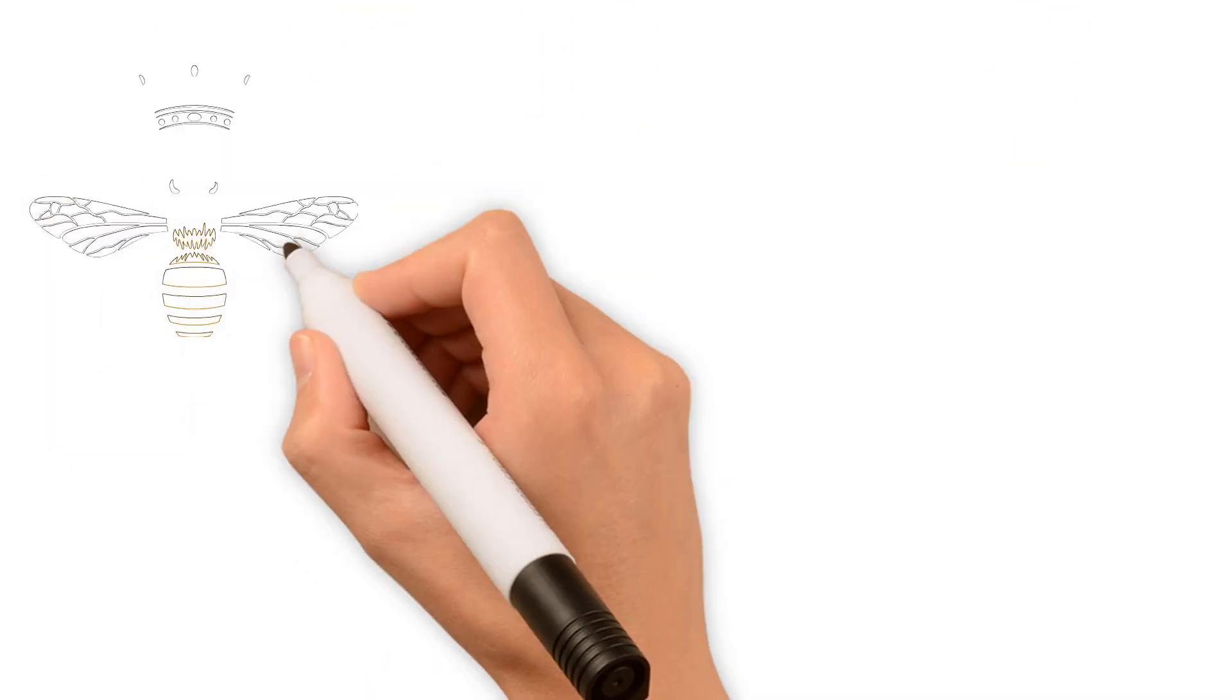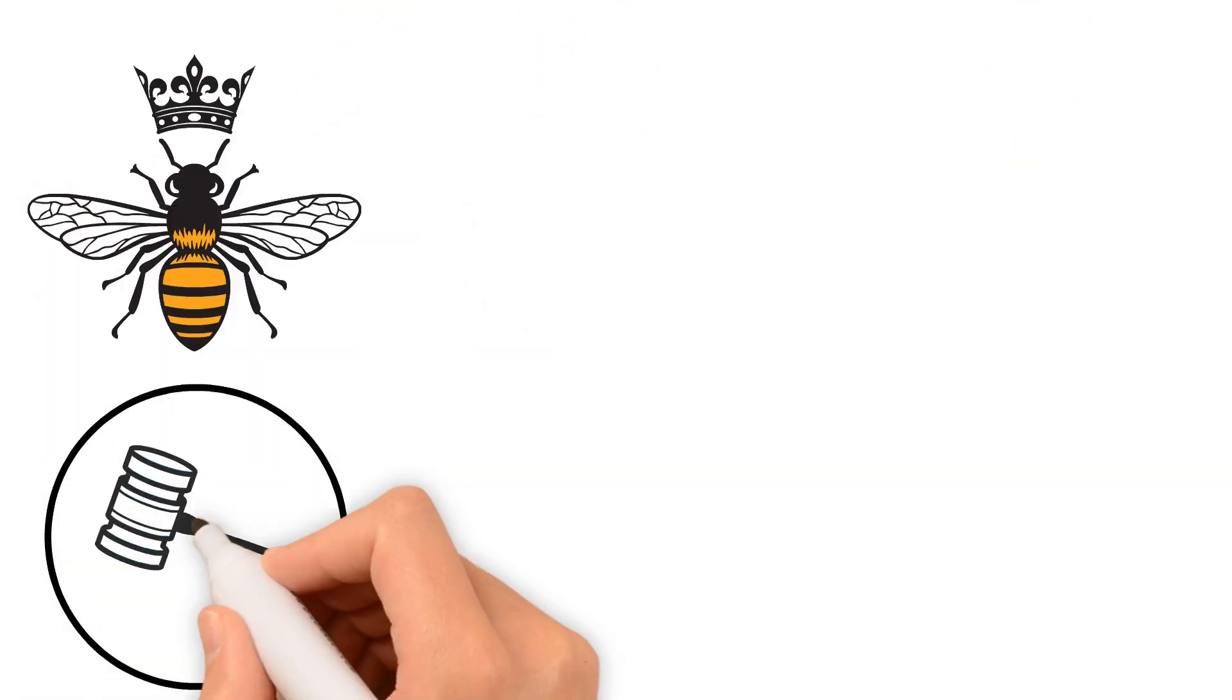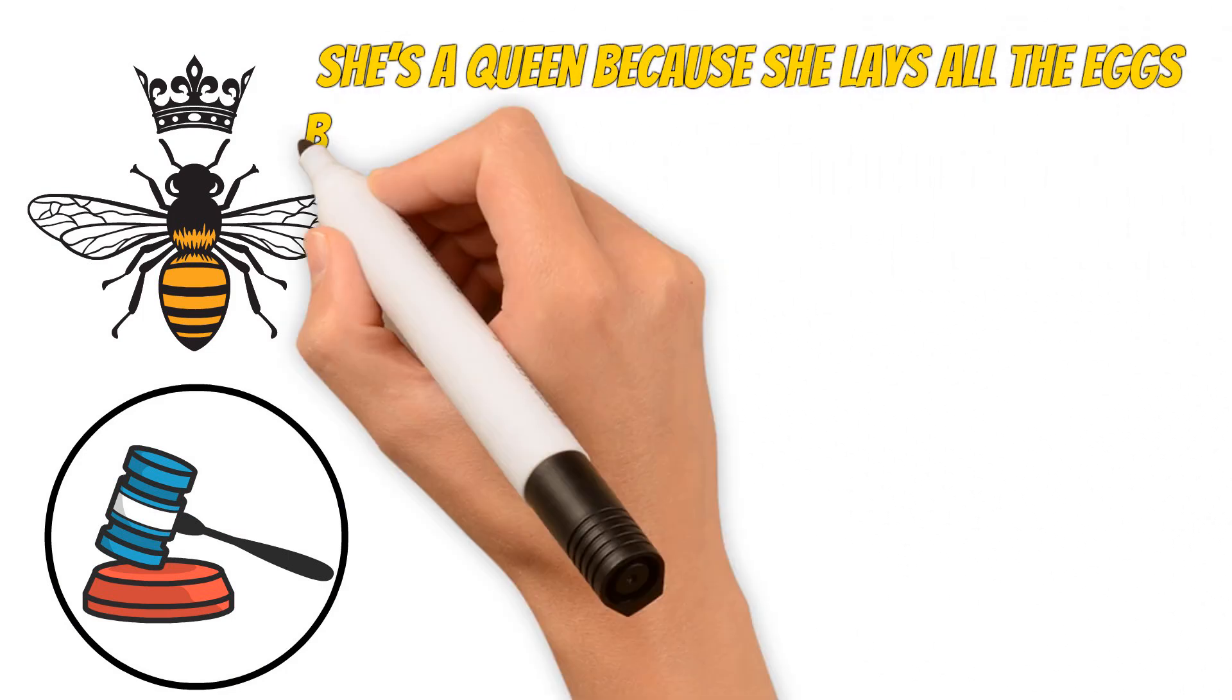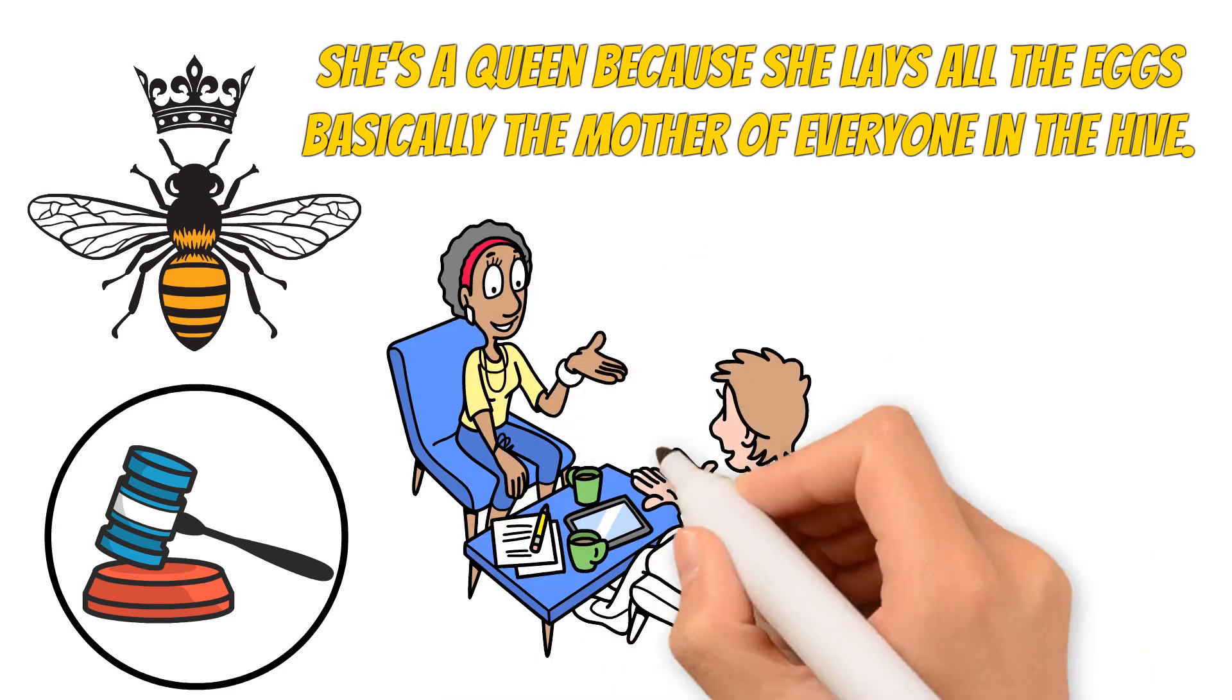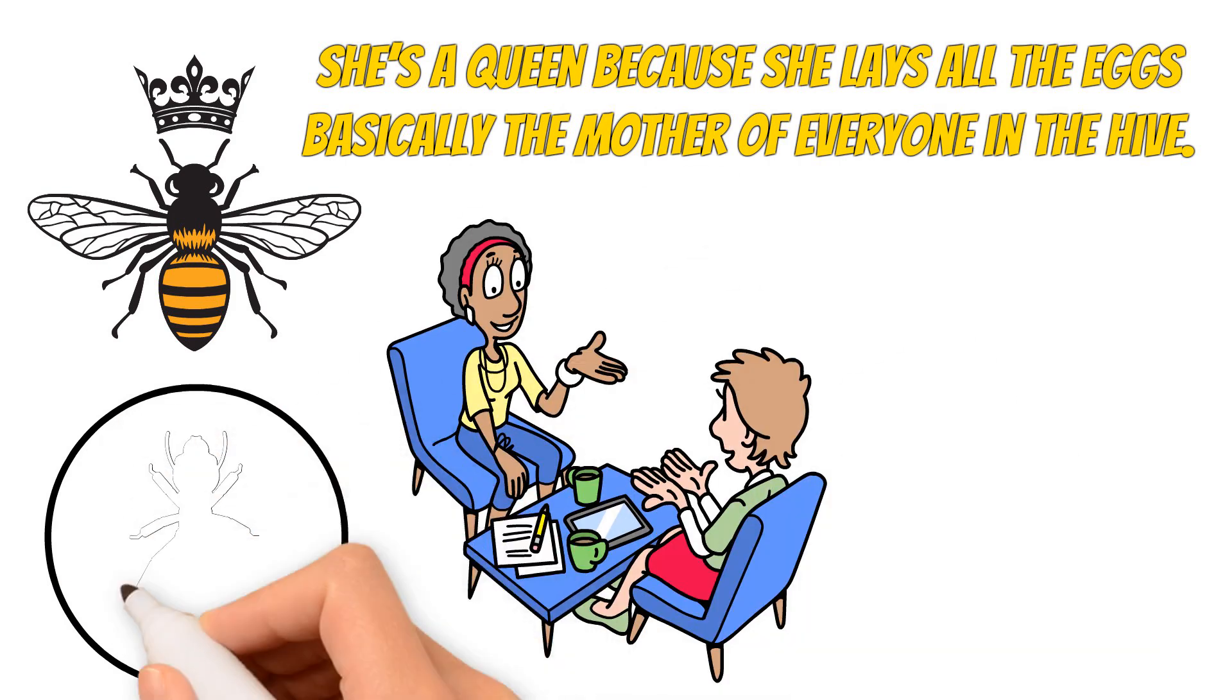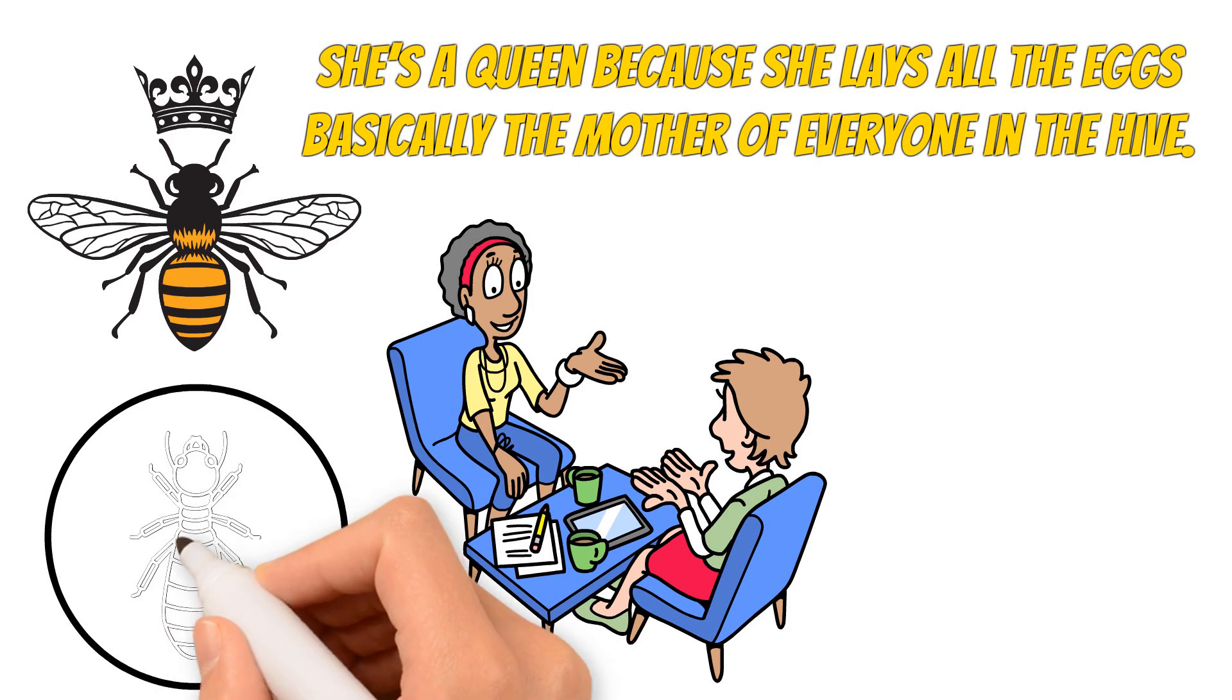See, the queen bee isn't royalty because she makes rules. She's a queen because she lays all the eggs, basically the mother of everyone in the hive. And while we're used to hearing about queen bees, other species like termites do have kings. So why not bees?